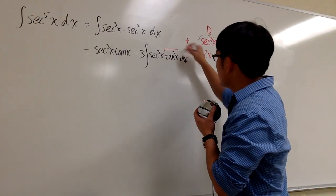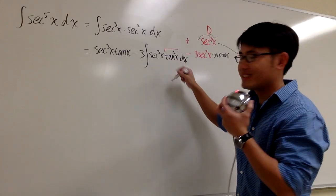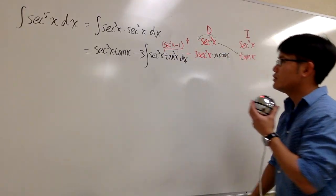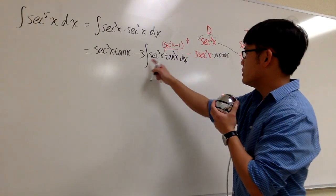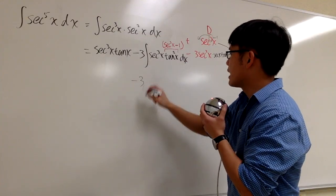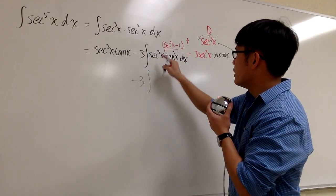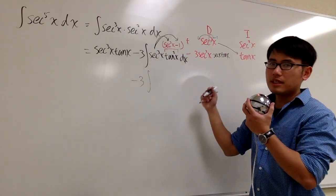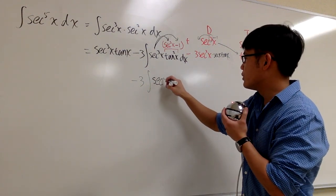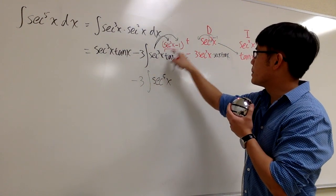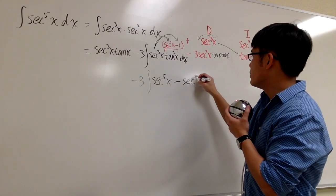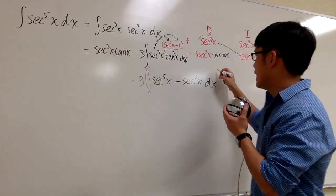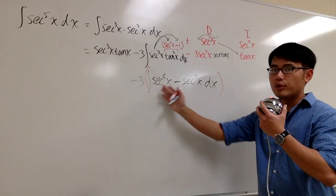Look at tangent squared x — we can use an identity: tangent squared x equals secant squared x minus 1. Now focusing on this integral with negative 3 out front, let's distribute secant to the third power into the parentheses. Third power times second power gives secant to the fifth power x, and secant to the third power times negative one is minus secant to the third power x dx.